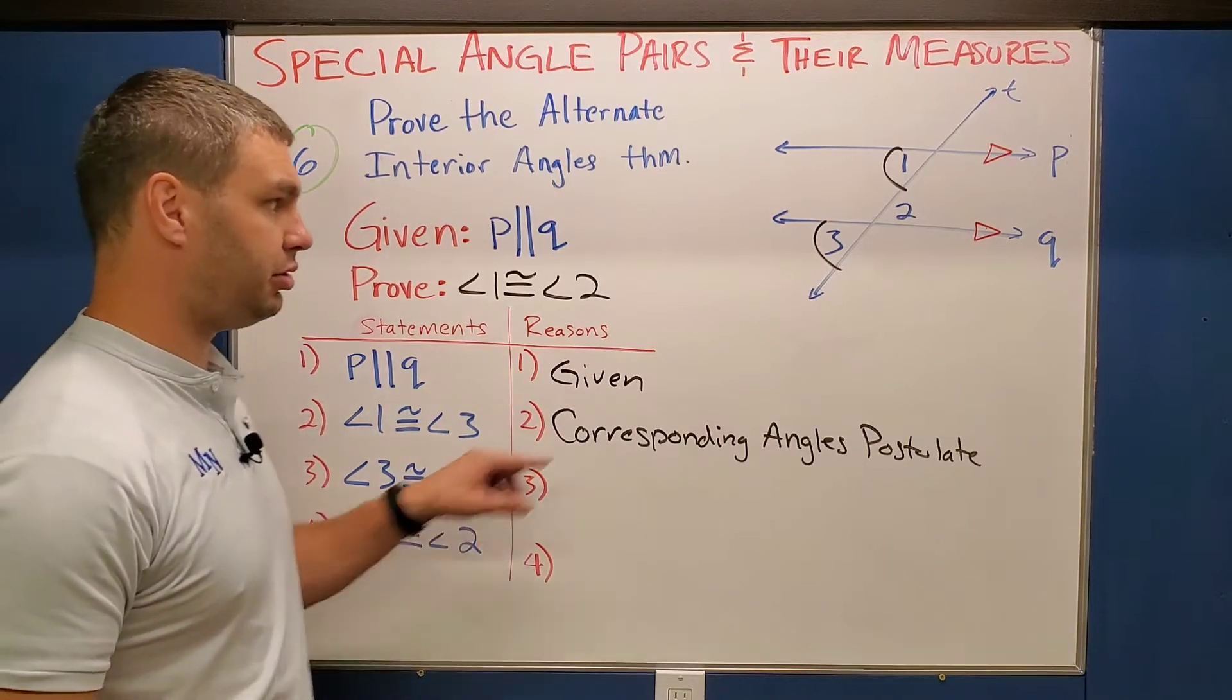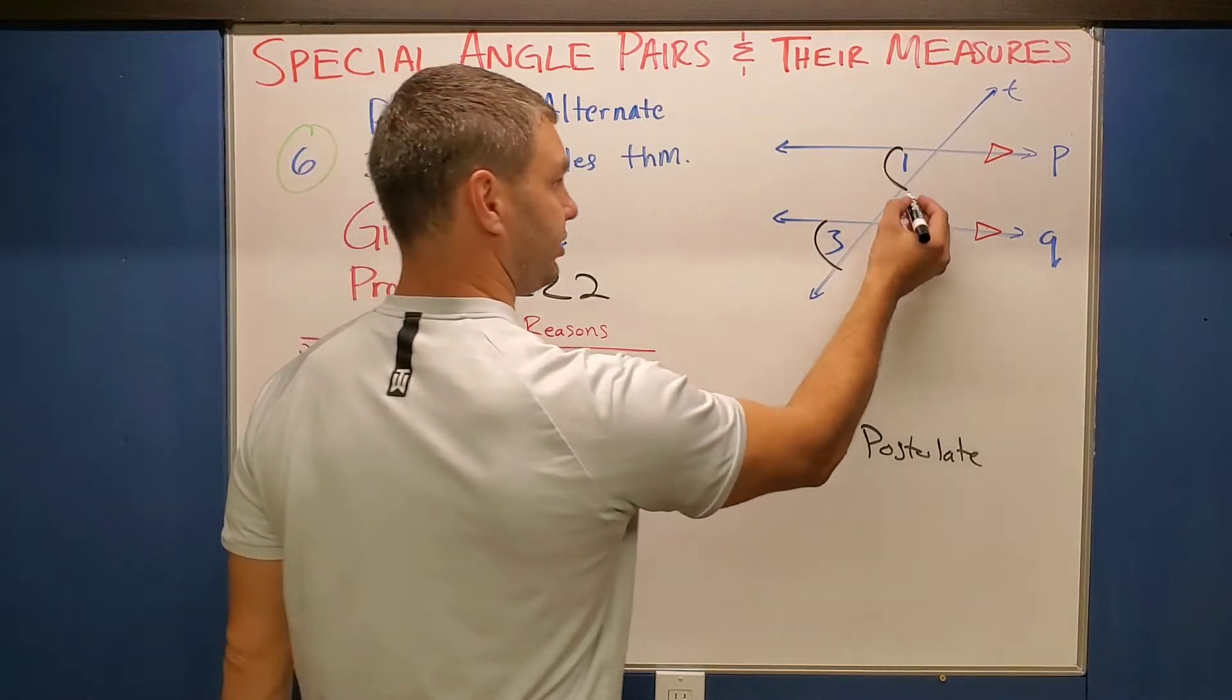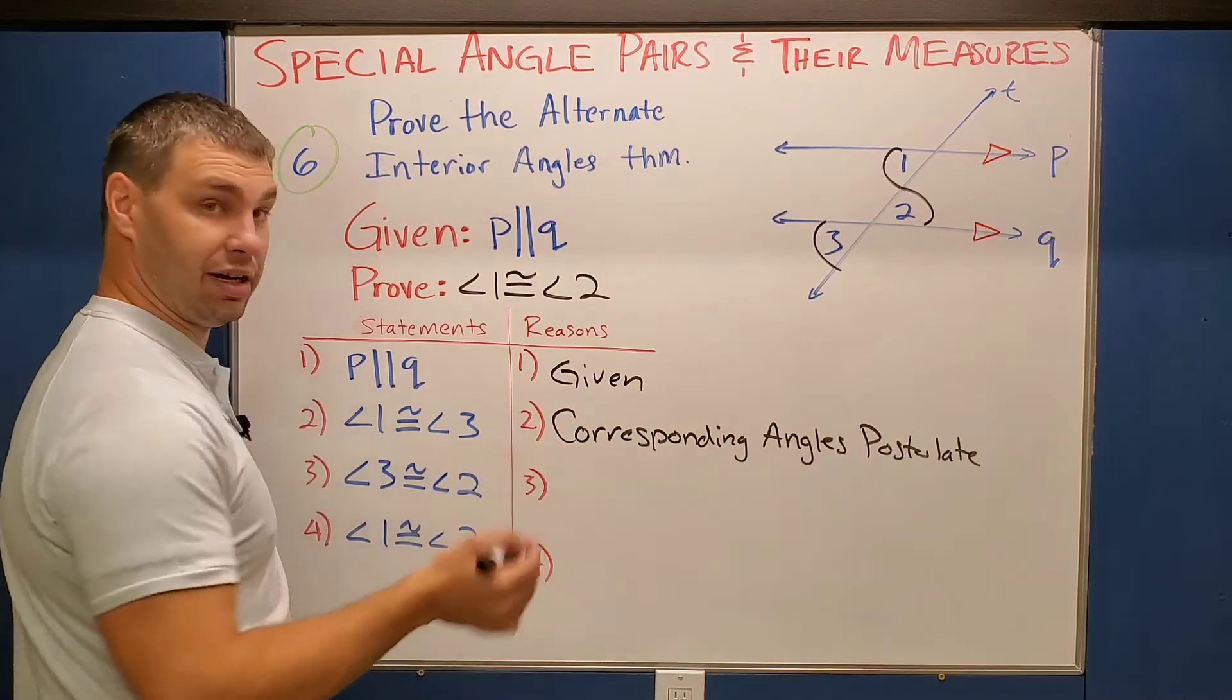Angle three is congruent to angle two. Why is that true? That's true because of the vertical angles theorem. They're across from each other in that X-type shape. So therefore, because of vertical angles, they are congruent.